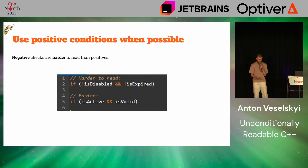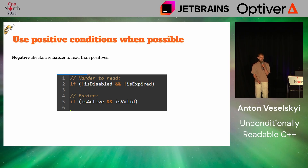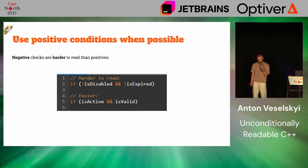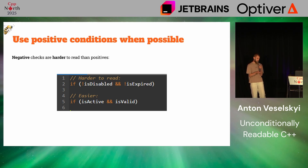Next tip: don't use negatives. Use positive conditions when possible. Negative stuff is harder for our brain to comprehend. When you say 'if it's not disabled and not expired,' it takes quite a bit for your brain to catch up. But if you say 'if it's active and valid,' you get it instantly.